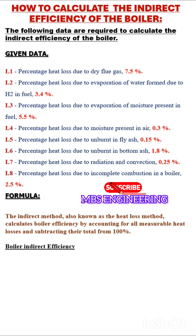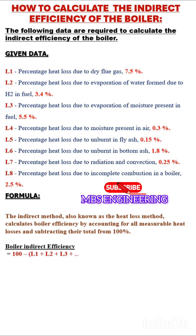The boiler indirect efficiency is equal to 100 minus the sum of the heat losses: L1 plus L2 plus L3 plus L4 plus L5 plus L6 plus L7 plus L8.